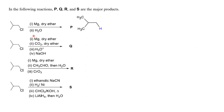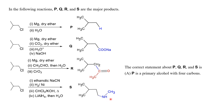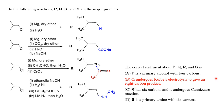Now let us go back to the question and list out the products. The first product P was an alkane. The second product Q was a sodium salt of a carboxylic acid. The third product R is a ketone — actually a methyl ketone. The fourth product S is a secondary amine. Option A says P is a primary alcohol with 4 carbons, but it is actually an alkane, so option A is wrong. Option D says S is a primary amine with 6 carbon atoms, but we know S is a secondary amine. So both A and D are not the answers.